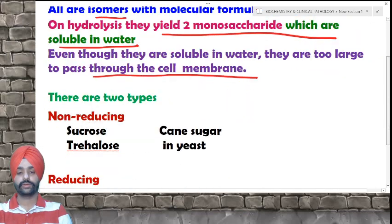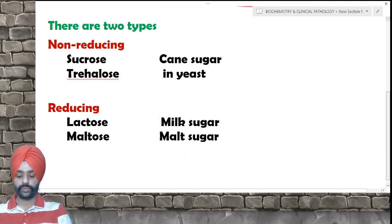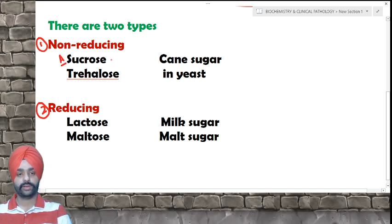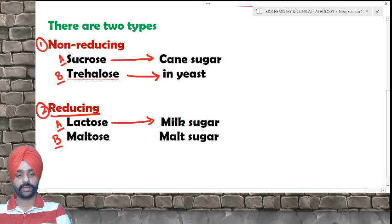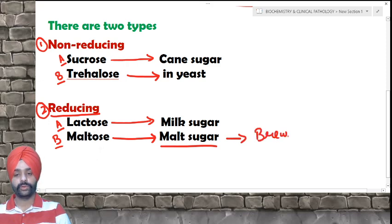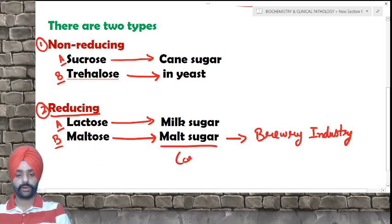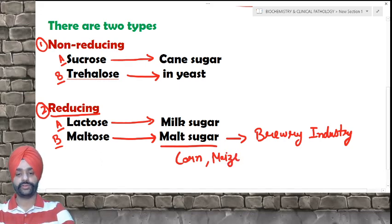Disaccharides are of two types: non-reducing and reducing. The non-reducing sugars are sucrose, which is present in cane sugar, and trehalose, which is found in yeast. Among reducing sugars, lactose is found in milk and is also known as milk sugar, and maltose is found in malt, also known as malt sugar. Maltose has commercial importance for the brewery industry and is generally found in corn or maize.